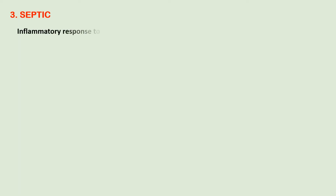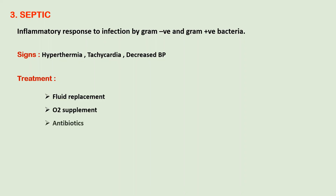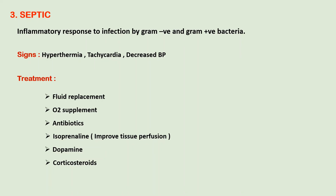The next type is septic shock, an inflammatory response to infection by gram-negative and, less commonly, gram-positive bacteria. Signs and symptoms include hyperthermia, tachycardia, and decreased blood pressure. Treatment includes fluid replacement, oxygen supplementation, antibiotic therapy, isoprenaline to improve tissue perfusion, and dopamine and corticosteroids to suppress systemic reactions to endotoxins.